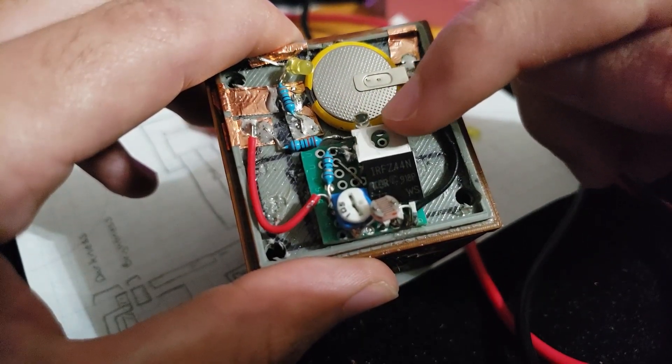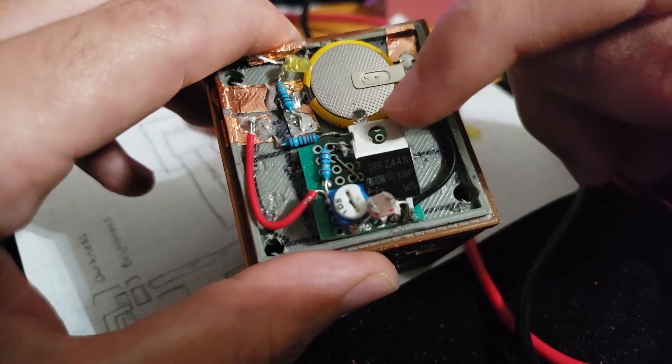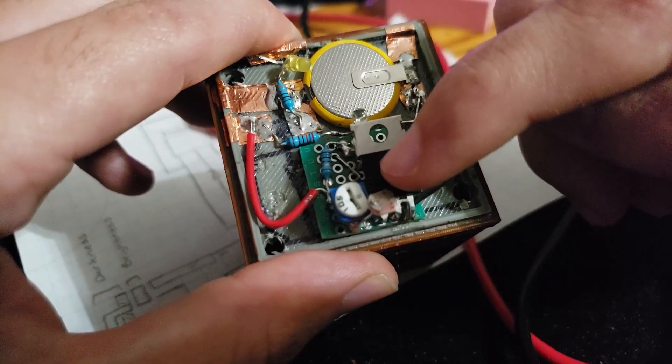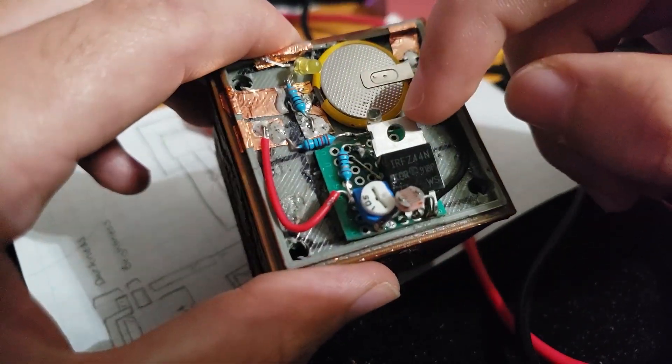The MOSFET only requires a signal around 1.2 volts in order for it to completely turn on. Once the MOSFET is fully powered,